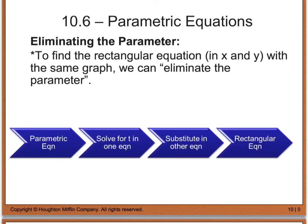The next thing we're going to do is look at how to eliminate the parameter — in other words, find the rectangular equation that represents the same curve as the parametric equation. To do that, we start with our parametric equations, solve for t in one of the equations (either x or y), then substitute that expression into the other equation to solve for one variable, giving us our rectangular equation.